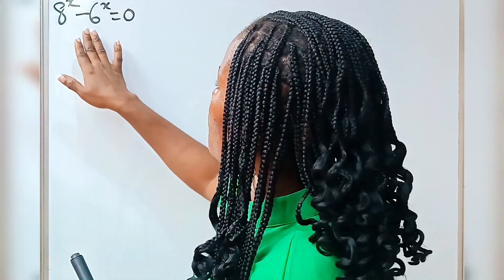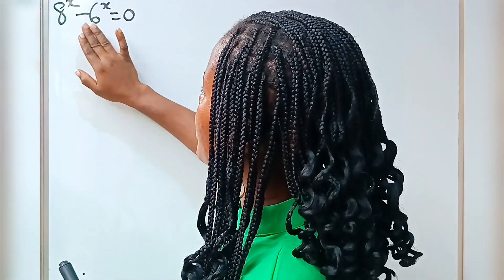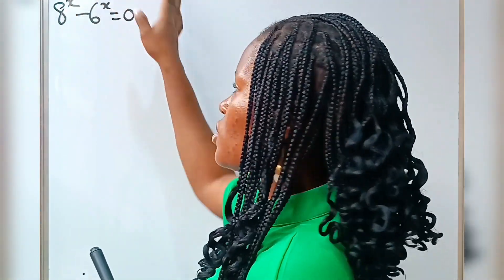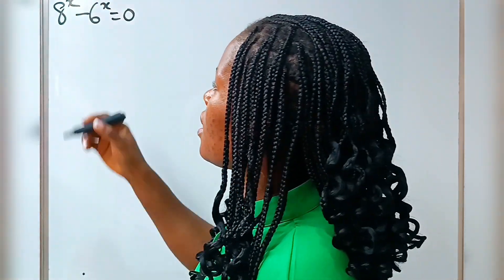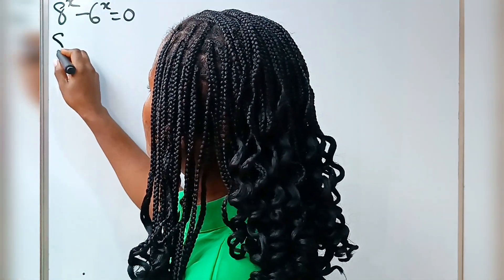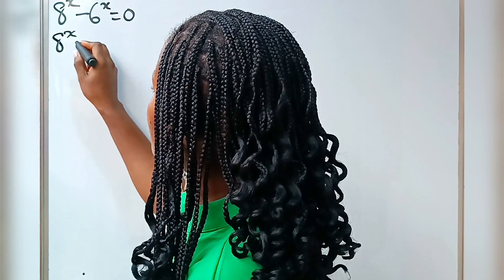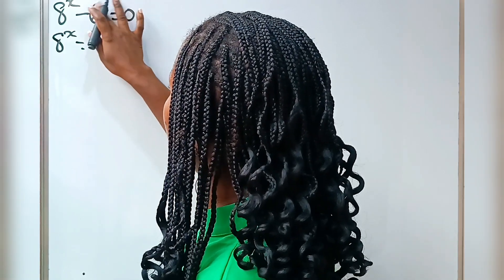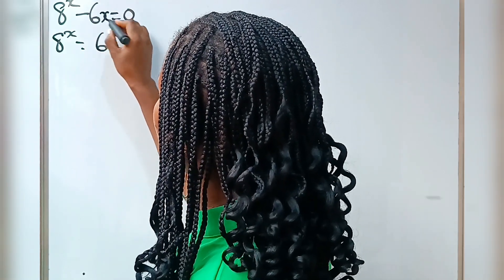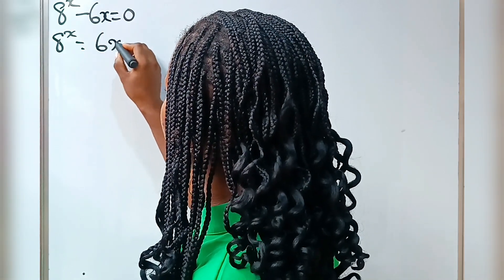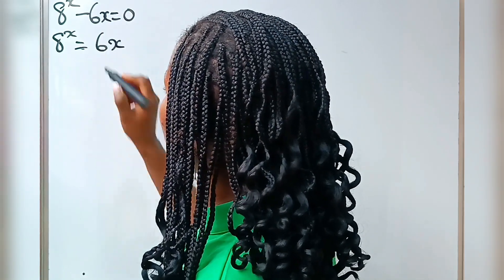First, let's transfer this minus 6x to this side. Now we have x to the power of x is equal to 6x. This 6x is equal to 6x.